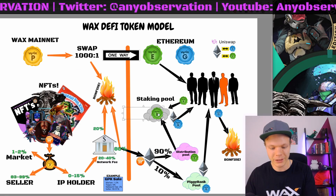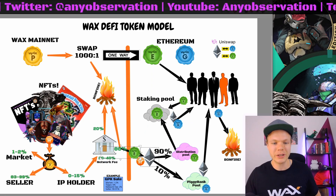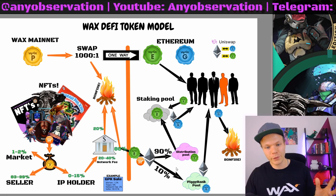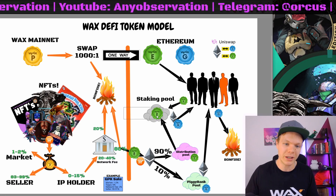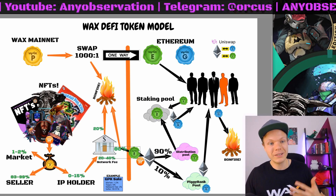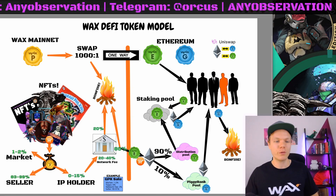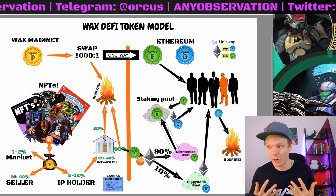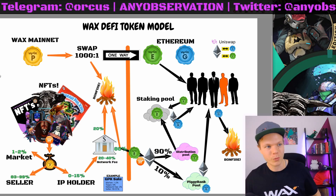They will swap WAXP to WAXE and then take that WAXE and swap it for Ethereum. Then they will exchange it for Ethereum and put the Ethereum into the distribution pool, which goes back to the staking pool. And when they swap to WAXE, the WAXP are burnt — 80% go to the bonfire. And 20% also go to the bonfire. So the bonfire gets initiated by 100% of the network fees on WAX.